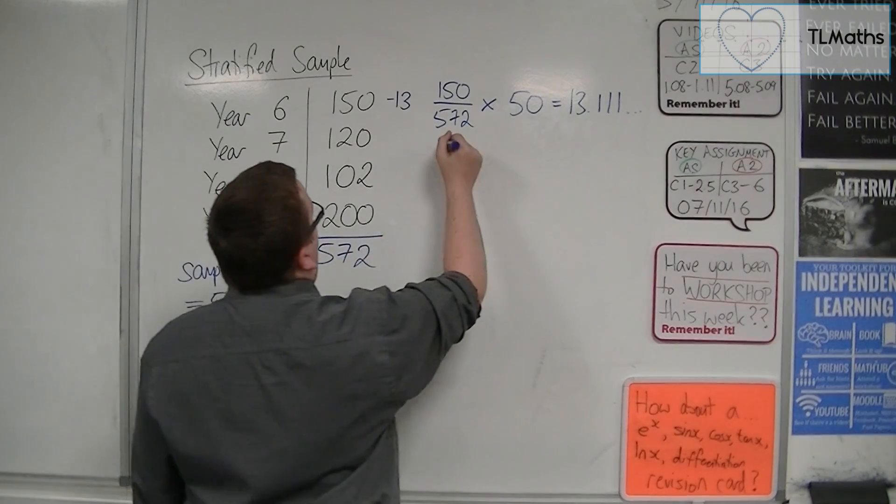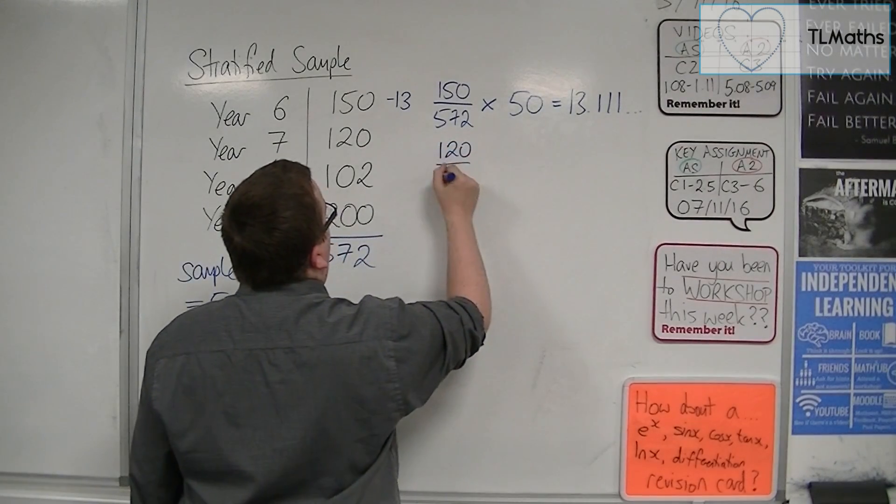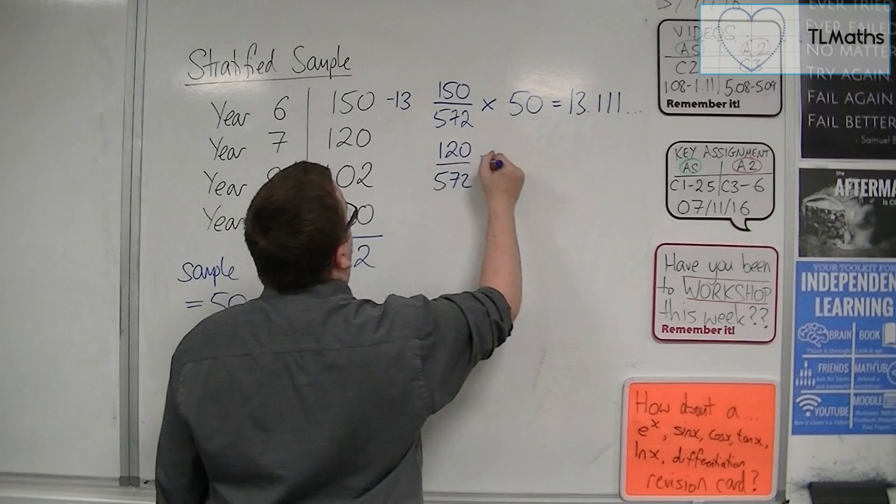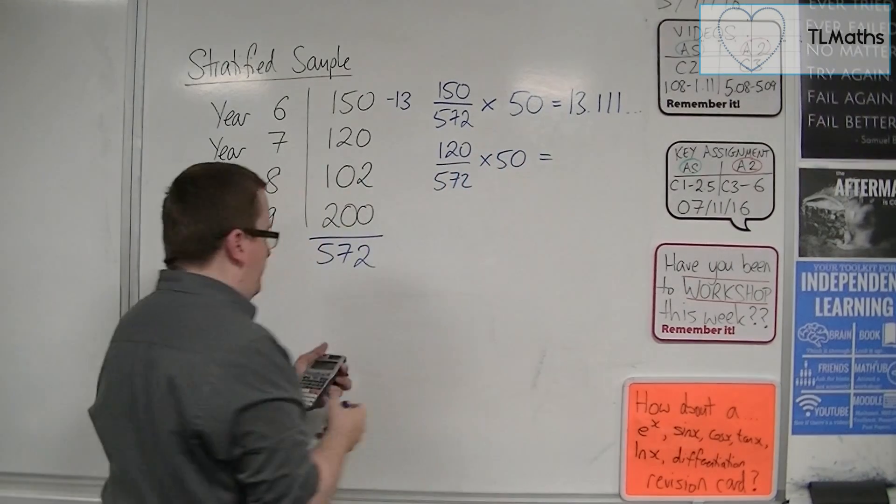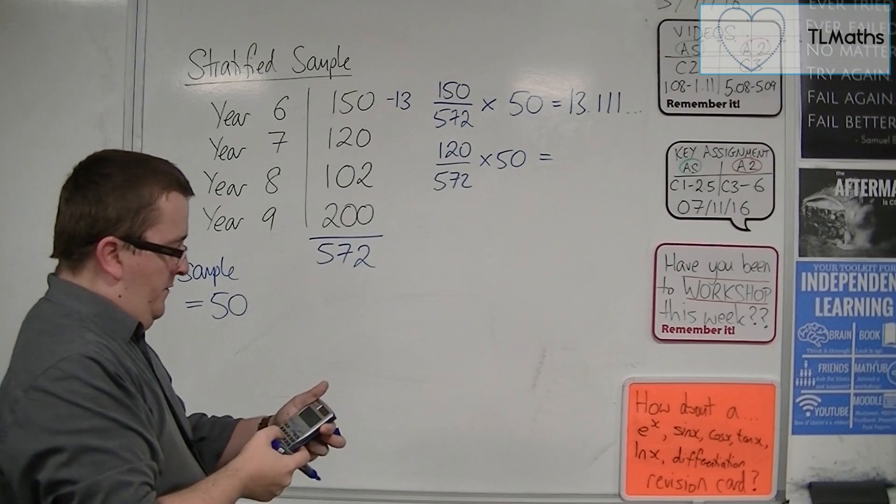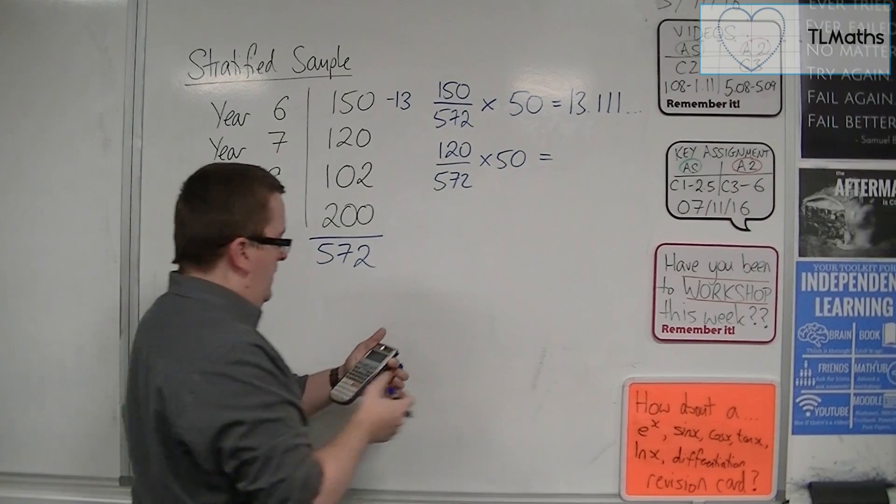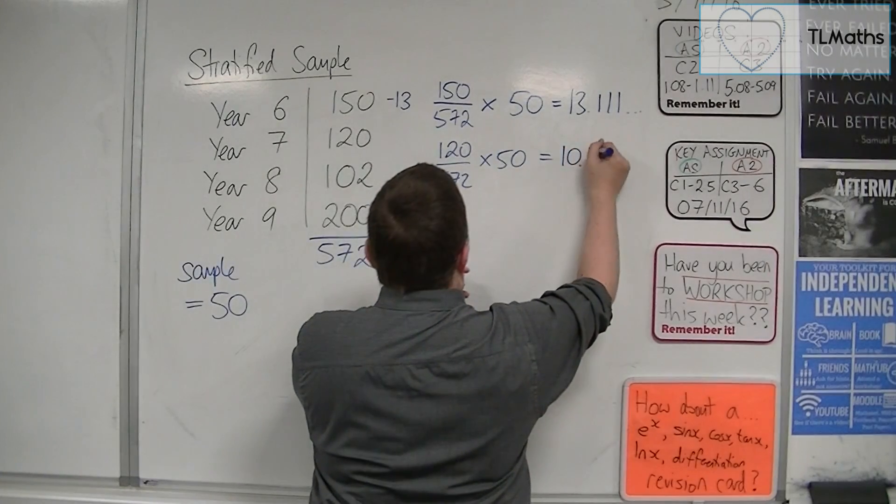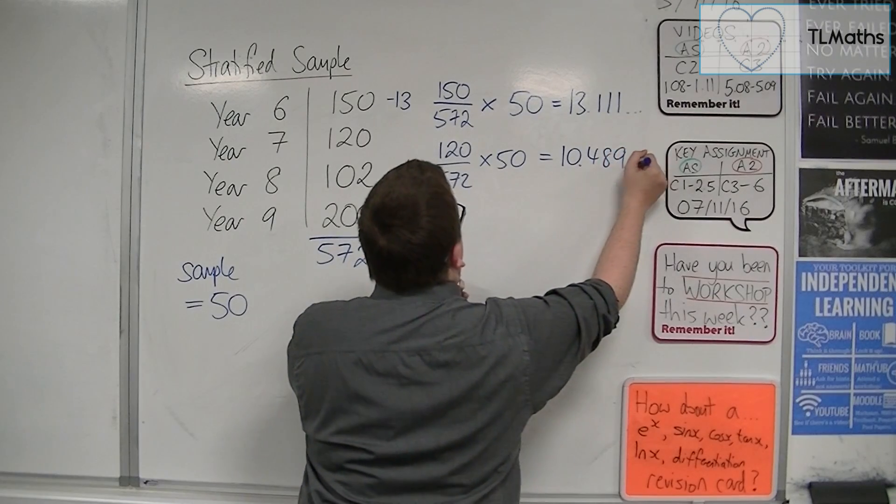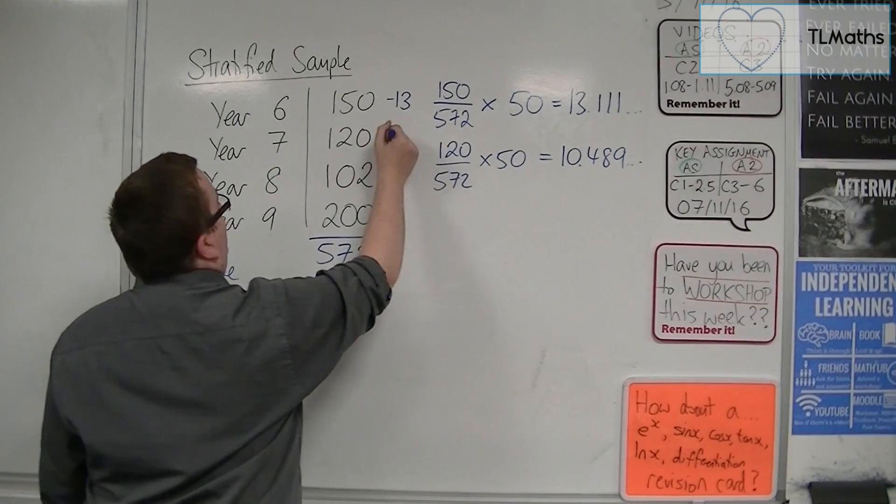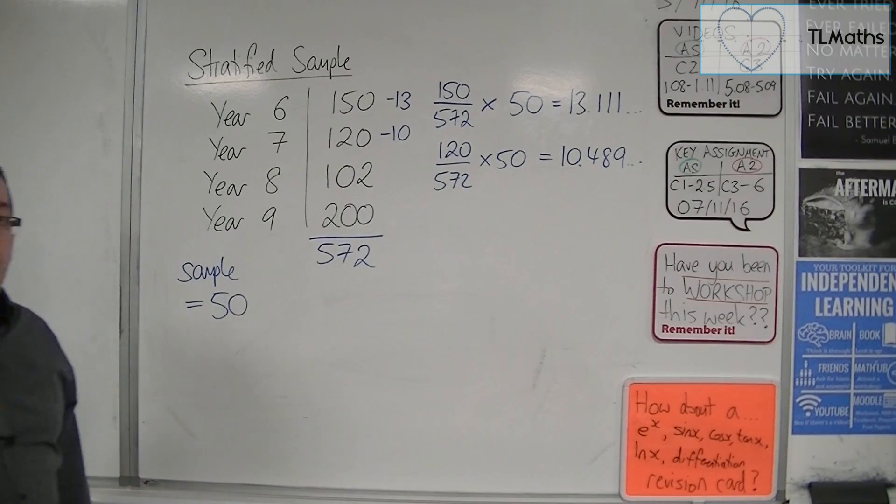For year 7, it's 120 over 572 times 50. So if I change it to 120, I get 10.489, etc. So I'd round that down to 10. So I want 10 from year 7.